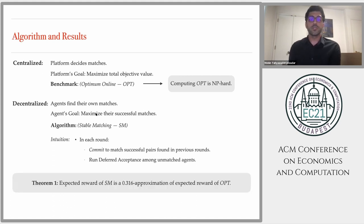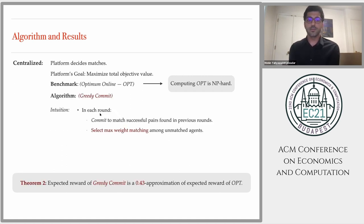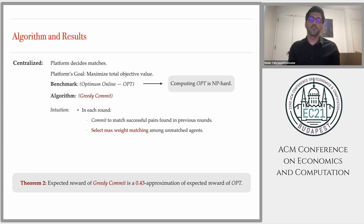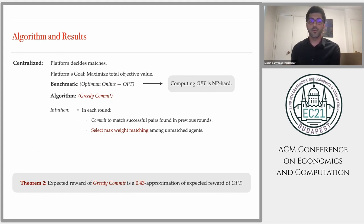In the main results today, we show that the expected reward of stable matching is a 0.316 approximation of the expected reward of optimal. Another natural algorithm is greedy commit: in each round, commit to match successful pairs found in previous rounds and select the max weight matching among unmatched agents. Our analysis shows that greedy commit is a 0.42 approximation of the expected reward of optimum. This result improves the previously known 0.25 approximation result shown by Chen et al. in the query commit setting.